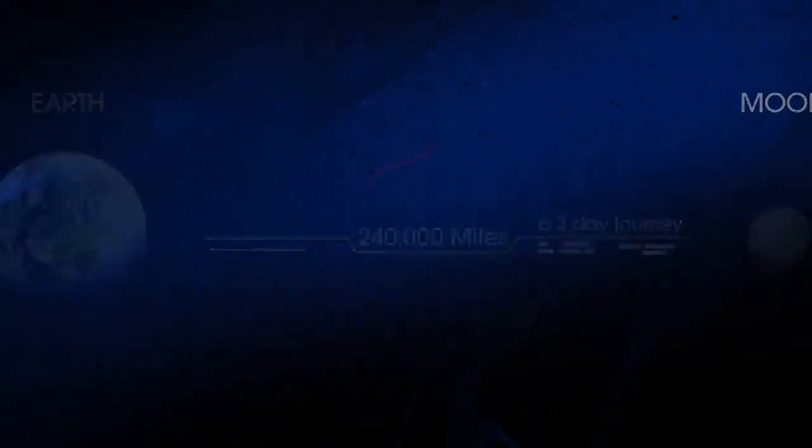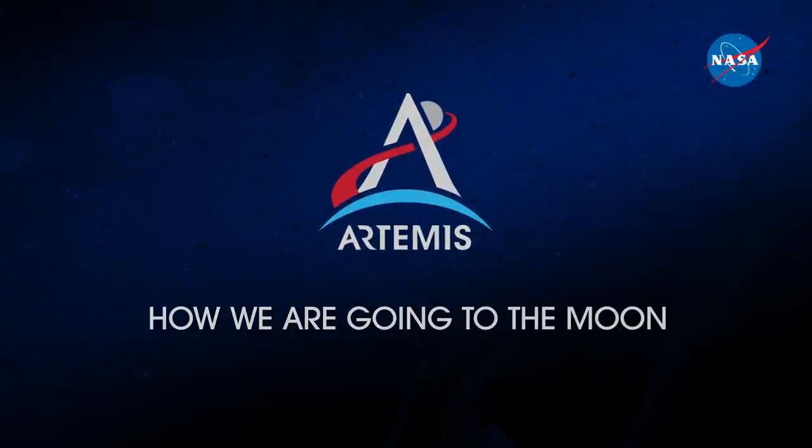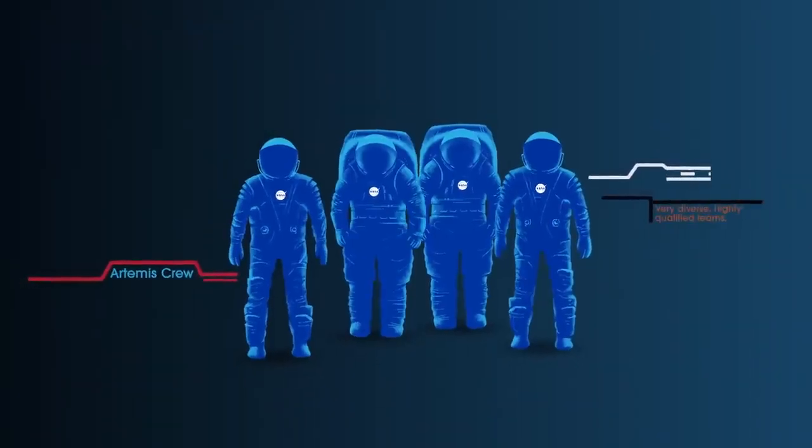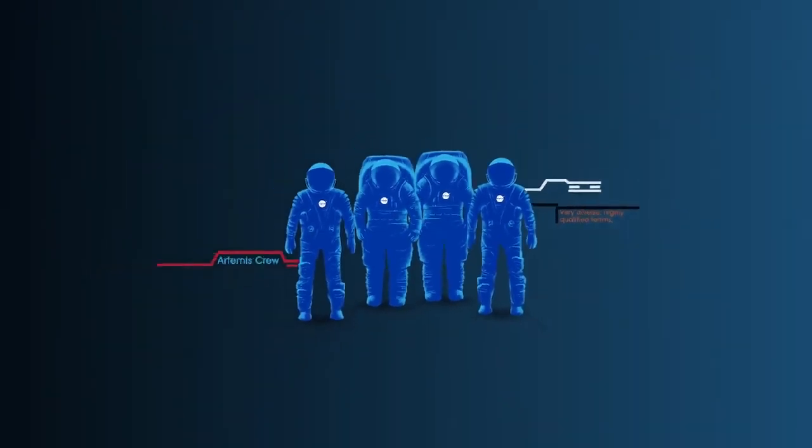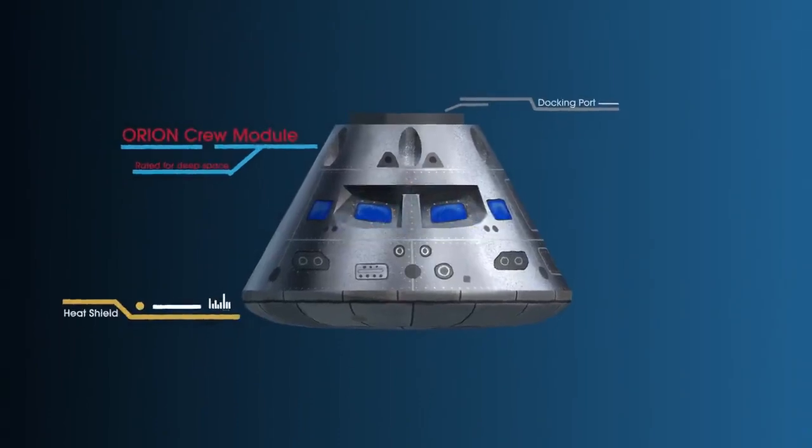So, what will an Artemis mission look like? Everything is designed and tested with our most important element in mind, the astronauts. This is their deep-space, human-rated spacecraft called Orion, built in three parts.